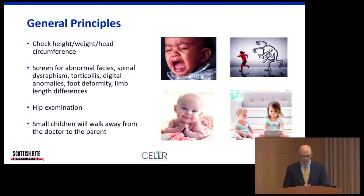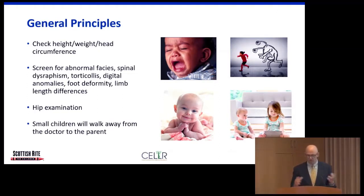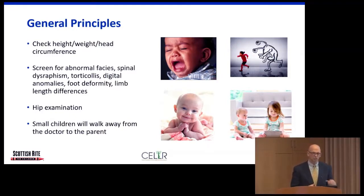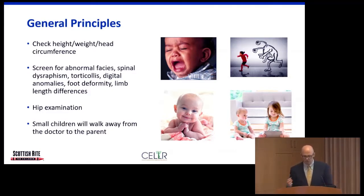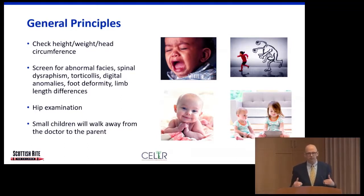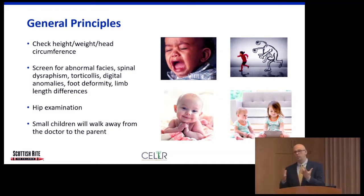When evaluating a small child, we check height, weight, and head circumference; screen for abnormal facial features; look at the back for hairy patches or dimpling suggestive of spinal dysraphism; look for torticollis, digital anomalies, and foot deformities. If there's a limb length difference along with some of these findings, that points toward a congenital etiology.